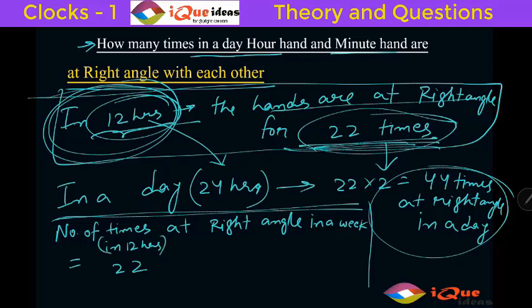So in a day it will be 22 into 2. Now in a week there are 7 days, so the whole thing multiplied by 7 that will be in a week.